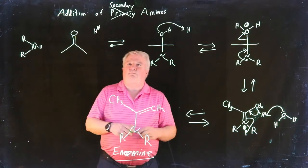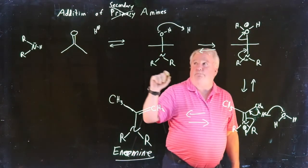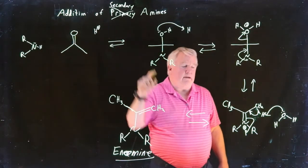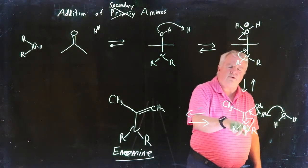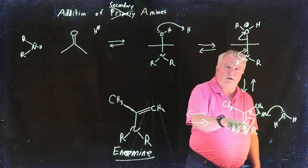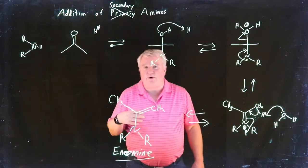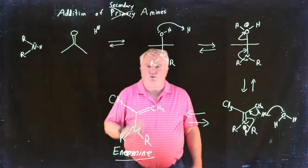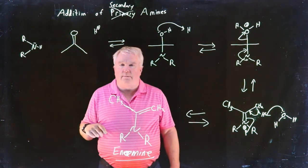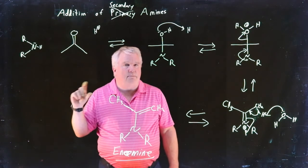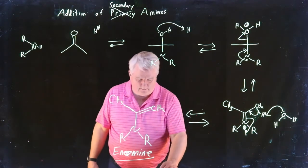So the reaction proceeds normally. In fact, it proceeds the same way as a primary amine would right up to here. And at this point we don't have a proton that we can pull off of the nitrogen, so we have to pull it off somewhere else. Notice now that for this reaction to proceed, at least one of the alpha carbons—that is, either this carbon or this carbon—must contain a hydrogen atom in order to proceed to the enamine.